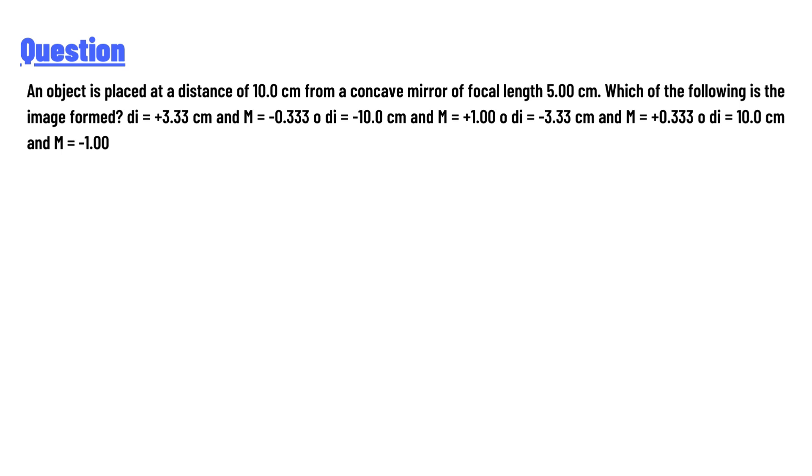Option A: di = +3.33 cm and m = -0.33. Option B: di = -10 cm and m = +1. Option C: di = -3.33 cm and m = +0.33. Option D: di = +10 cm and m = -1.